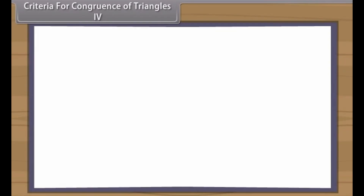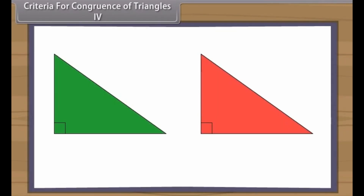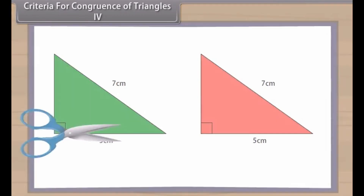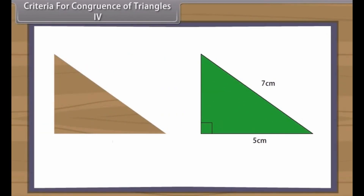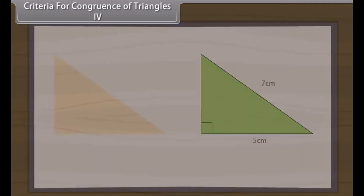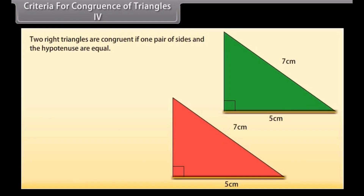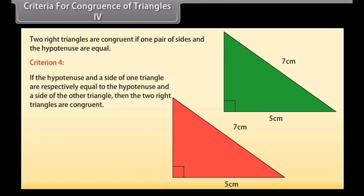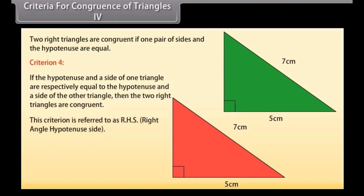Criteria for congruence of triangles 4: construct two right-angled triangles with hypotenuse equal to 7 cm and one side equal to 5 cm each. Cut them out and place one triangle over the other with equal sides placed on each other. We will observe that the two triangles cover each other completely and so they are congruent. Thus two right triangles are congruent if one pair of sides and the hypotenuse are equal. Criterion 4: if the hypotenuse and a side of one triangle are respectively equal to the hypotenuse and a side of the other triangle, then the two right triangles are congruent. This criterion is referred to as RHS — right-angle hypotenuse side.